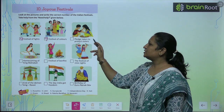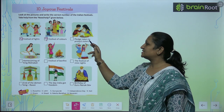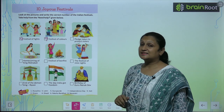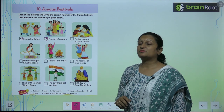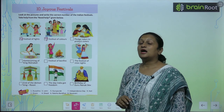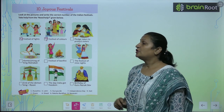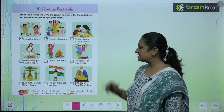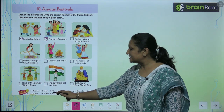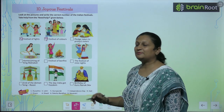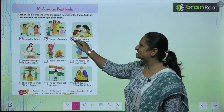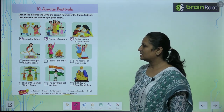Pledge taken to protect sisters. Aisa festival jis mein bhai apni behen ki raksha karte hai - wo festival kaun sa hai? That is Raksha Bandhan. So you will write 6 here.